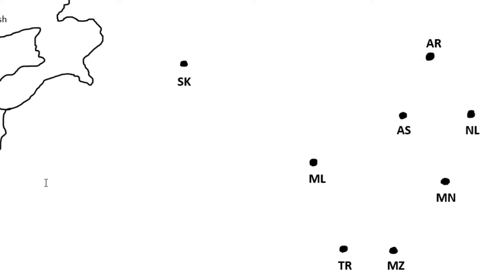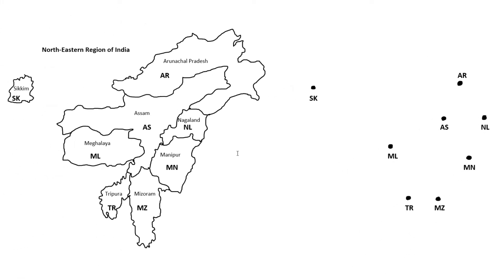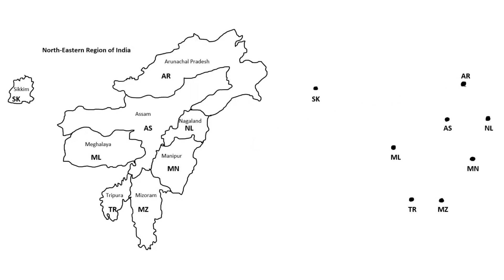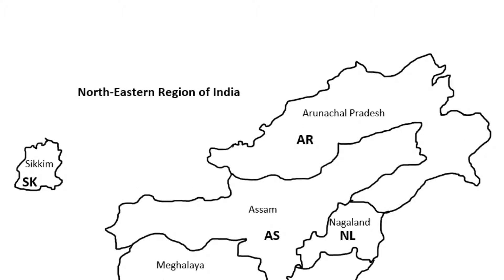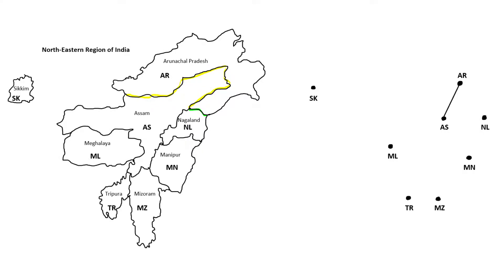Next, I'm going to go state by state and draw a connecting edge between each state and any state that shares a common boundary with it. For example, going to AR here, it shares a common boundary with AS. It also shares a common boundary with NL. So I'm going to connect AR to AS and connect AR to NL. Now I'm done with AR, and I'm going to move on to another state.